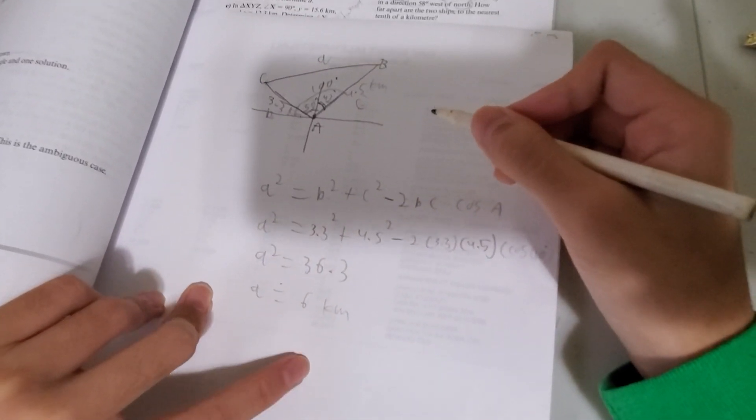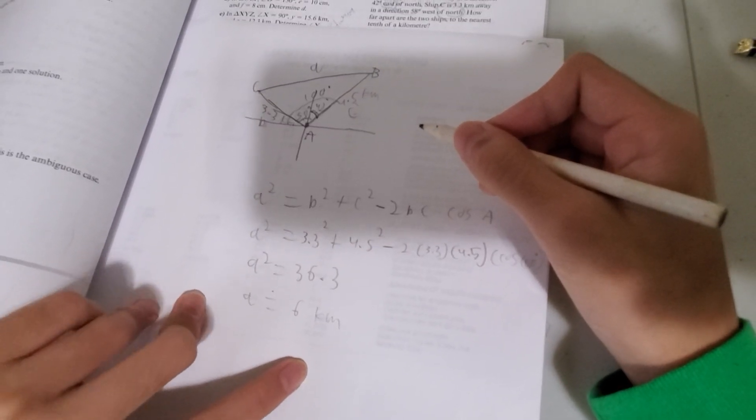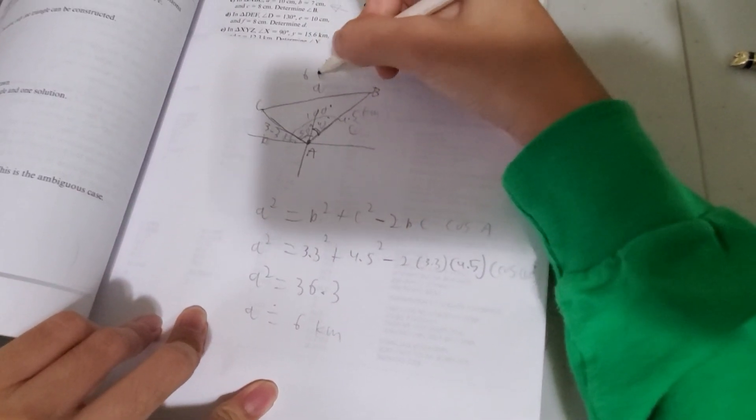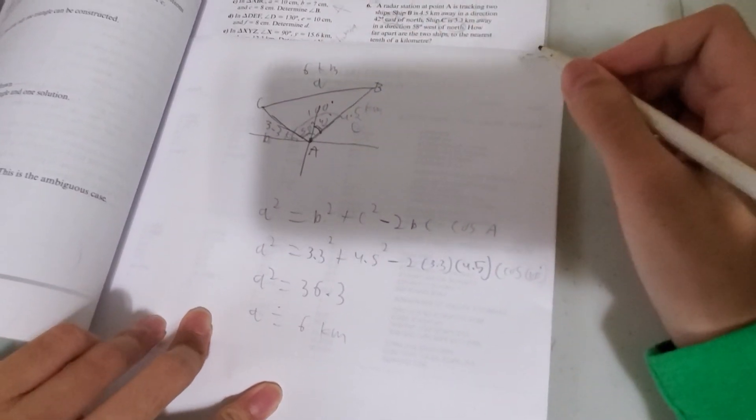Therefore the distance in between the two ships is 6 kilometers. That's how you use the cosine law.